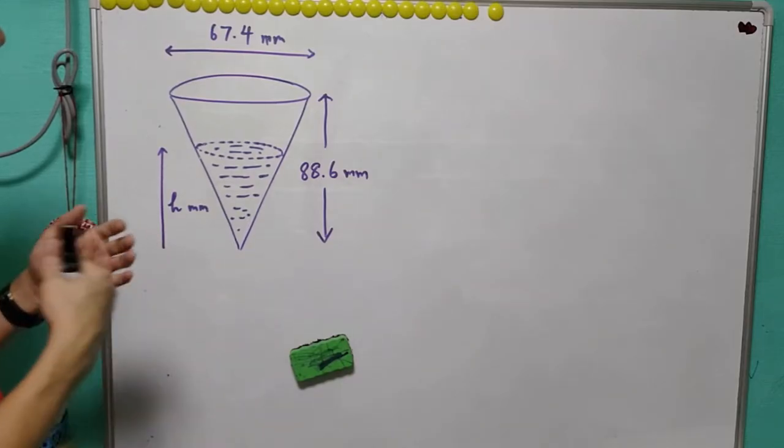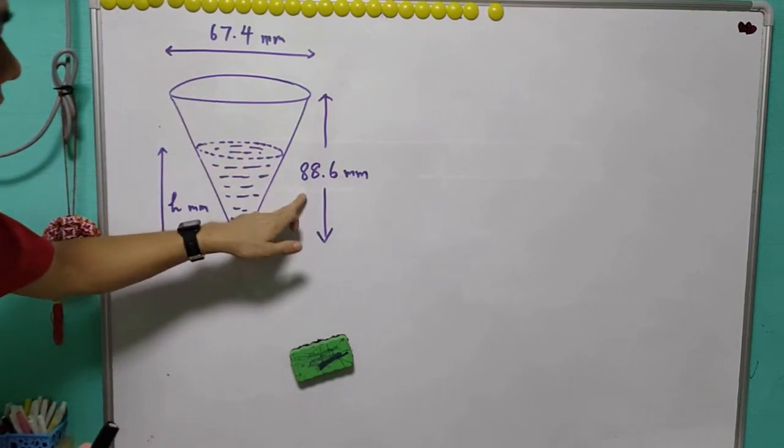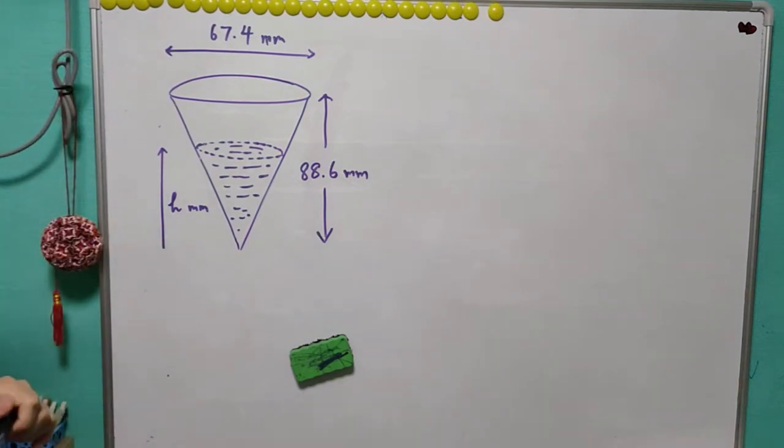There are a few data given here. That is the diameter and the height. Do you actually need to use all the data?